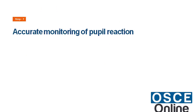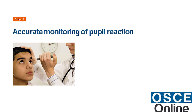For accurate monitoring of pupil reaction, reduce any external bright light by darkening the room if necessary, or shield the patient's eyes with your hands. Assess the size, shape, and equality of pupils. Ask the patient to open their eyes and note the size, shape, and equality of both pupils simultaneously, as an indication of brain function.